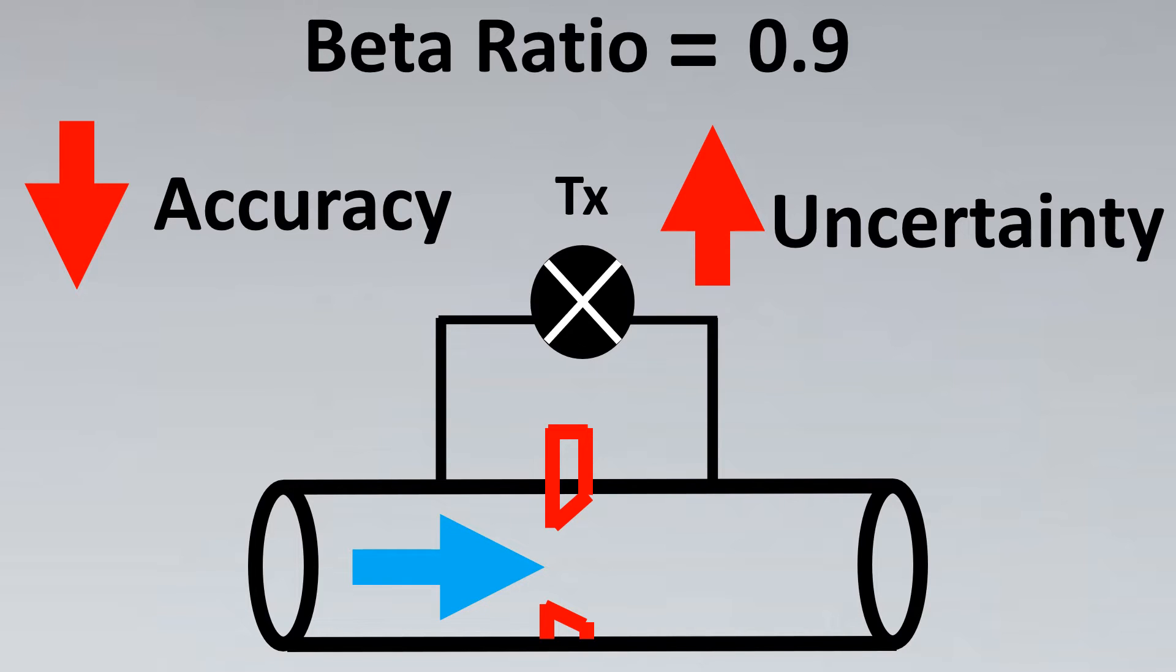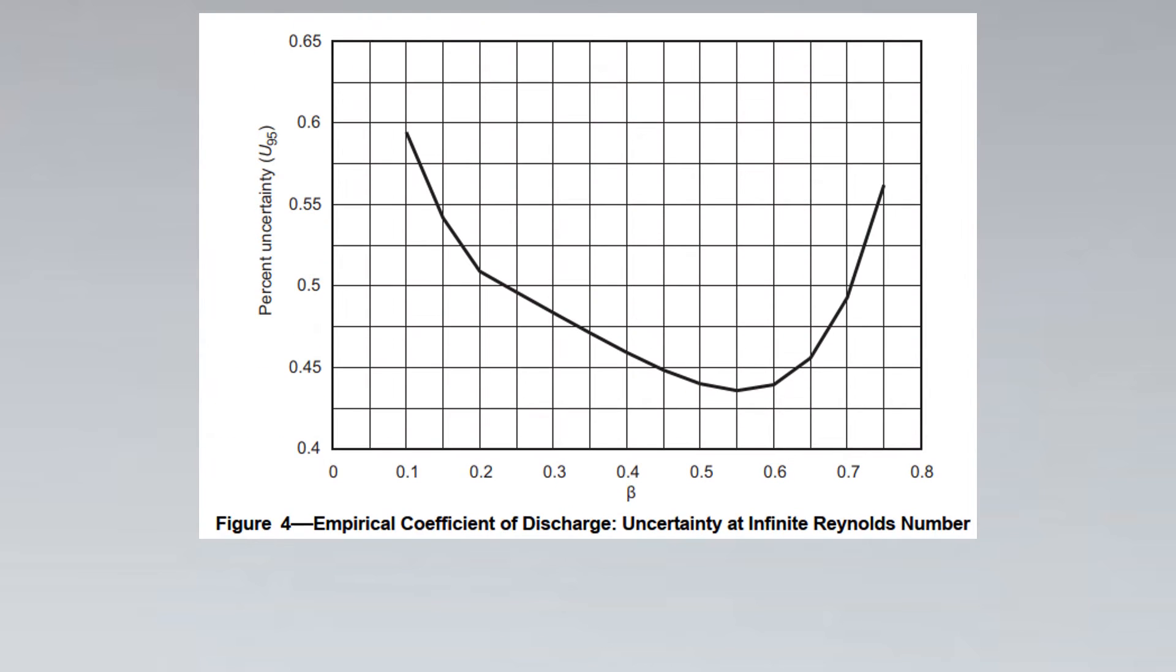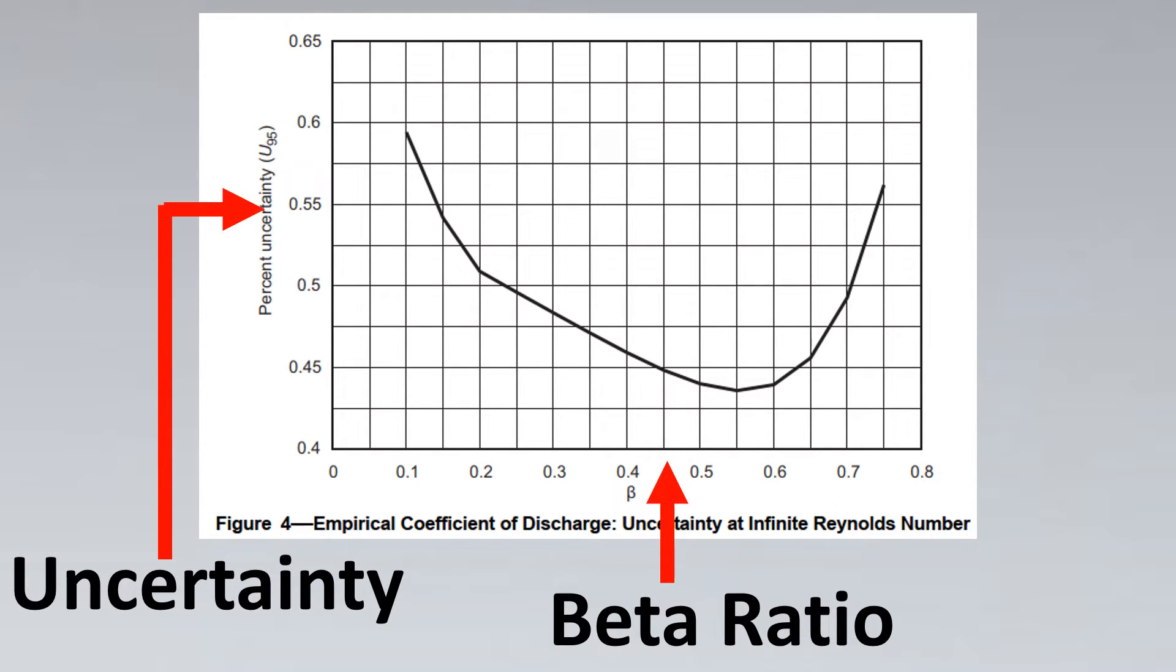This is an amazing concept explained by API standard. API MPMS is one of the most important standards when it comes to orifice. It has the concepts explained in a very simple fashion. Now let's look at a graph which is given by the standard. So here the x-axis has beta ratio and the y-axis has uncertainty. Here we'll see that our range is between 0.3 to 0.6. So this is our range, and if you notice, for this range the uncertainty coefficient is very low. So for this range you see it is the least in the graph.